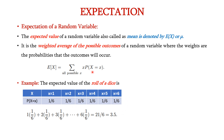The idea behind this equation is we have to multiply x with its individual probabilities. So if you multiply 1 into 1 by 6 plus 2 into 1 by 6, up to 6 into 1 by 6, we get 21 by 6, which is nothing but 3.5. Thus the expected value for rolling of a dice is 3.5.